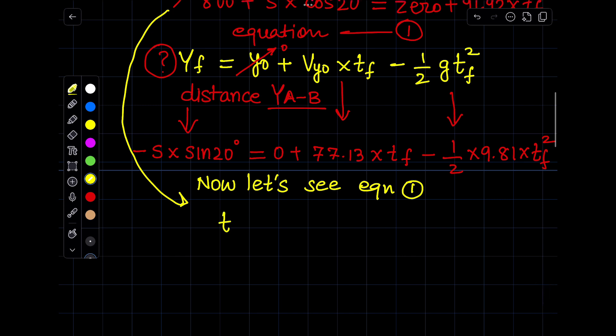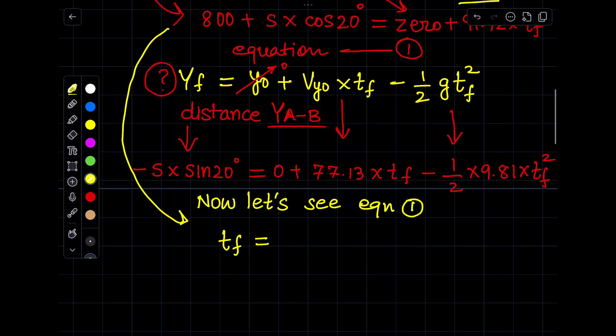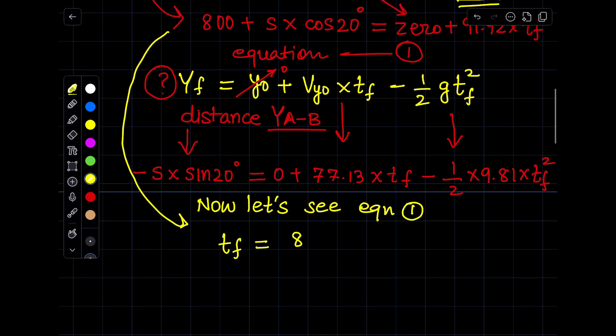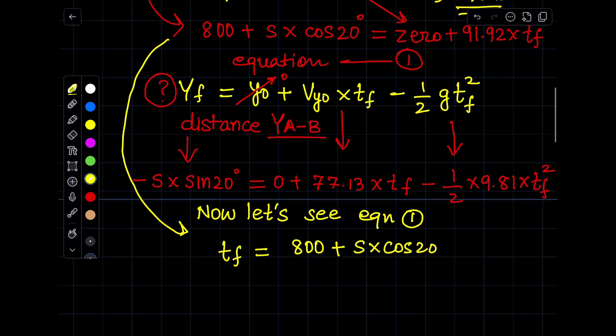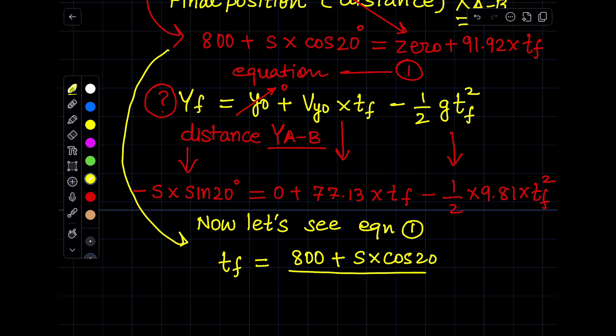Now I will write the value for TF by using equation 1. To make our manual calculation easier, I will write TF is equal to 800 plus S cos 20° divided by 91.92. Now you have to put this relation of TF in equation 2.